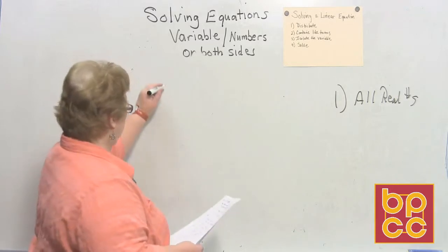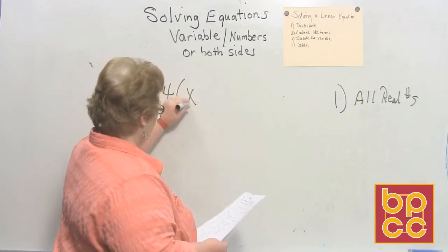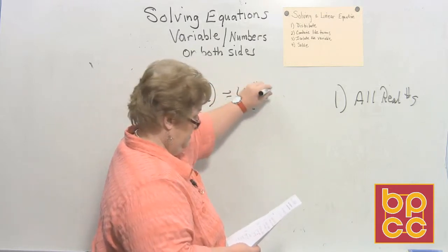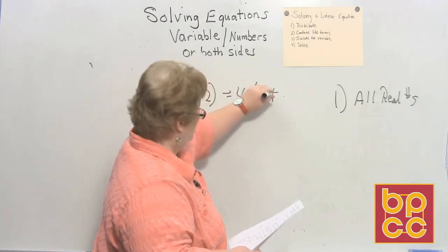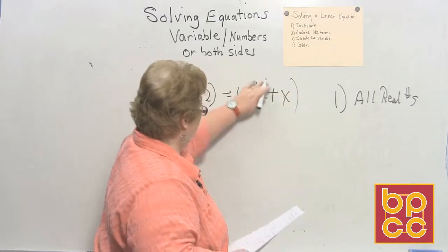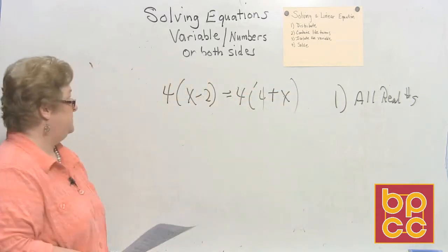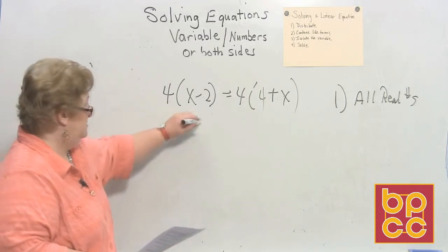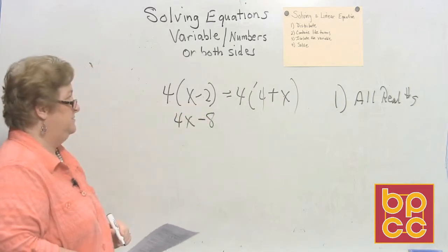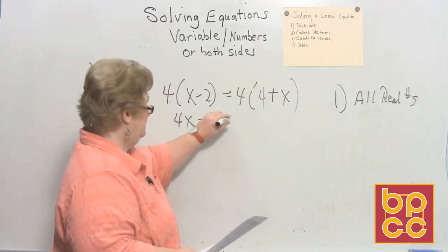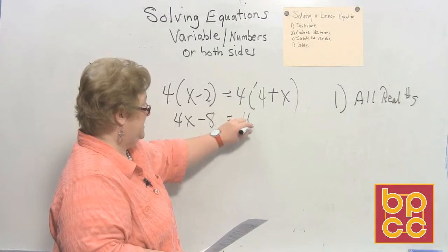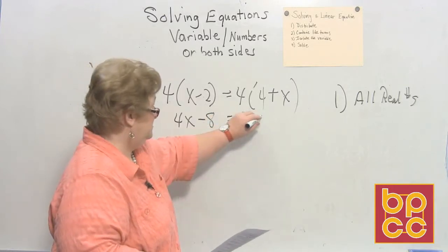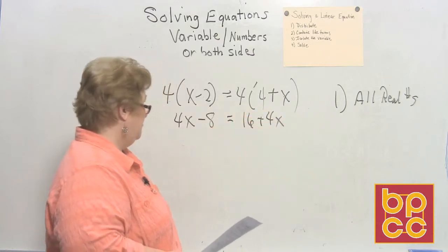Okay, let's go to another one. This time I'm going to go 4 times x minus 2 equal 4 times 4 plus x. Now here we go. 4 times x is 4x. 4 times negative 2, negative 8. And then over here, I have 4 times 4 is 16, and 4 times the 1x is plus 4x.